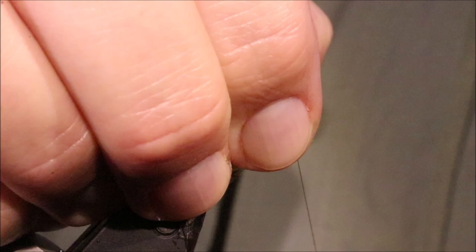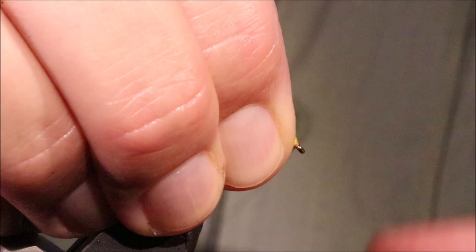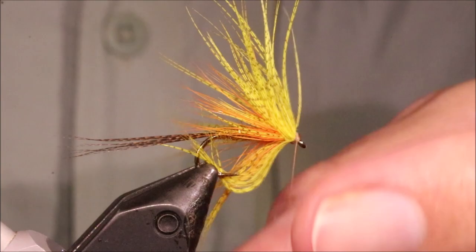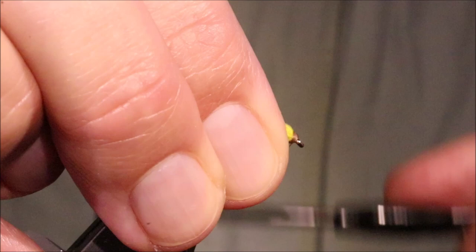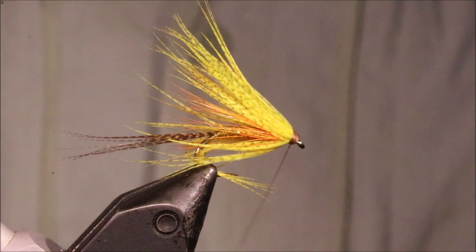And then, come in and trim that away nice and close. You can actually, that stem is a bit thick. So, I'm just using my thumbnail. Just to crush it. Which will let me tidy up over it a bit better. Then, I'm tying back from the eye. Building my head. Nice and even.